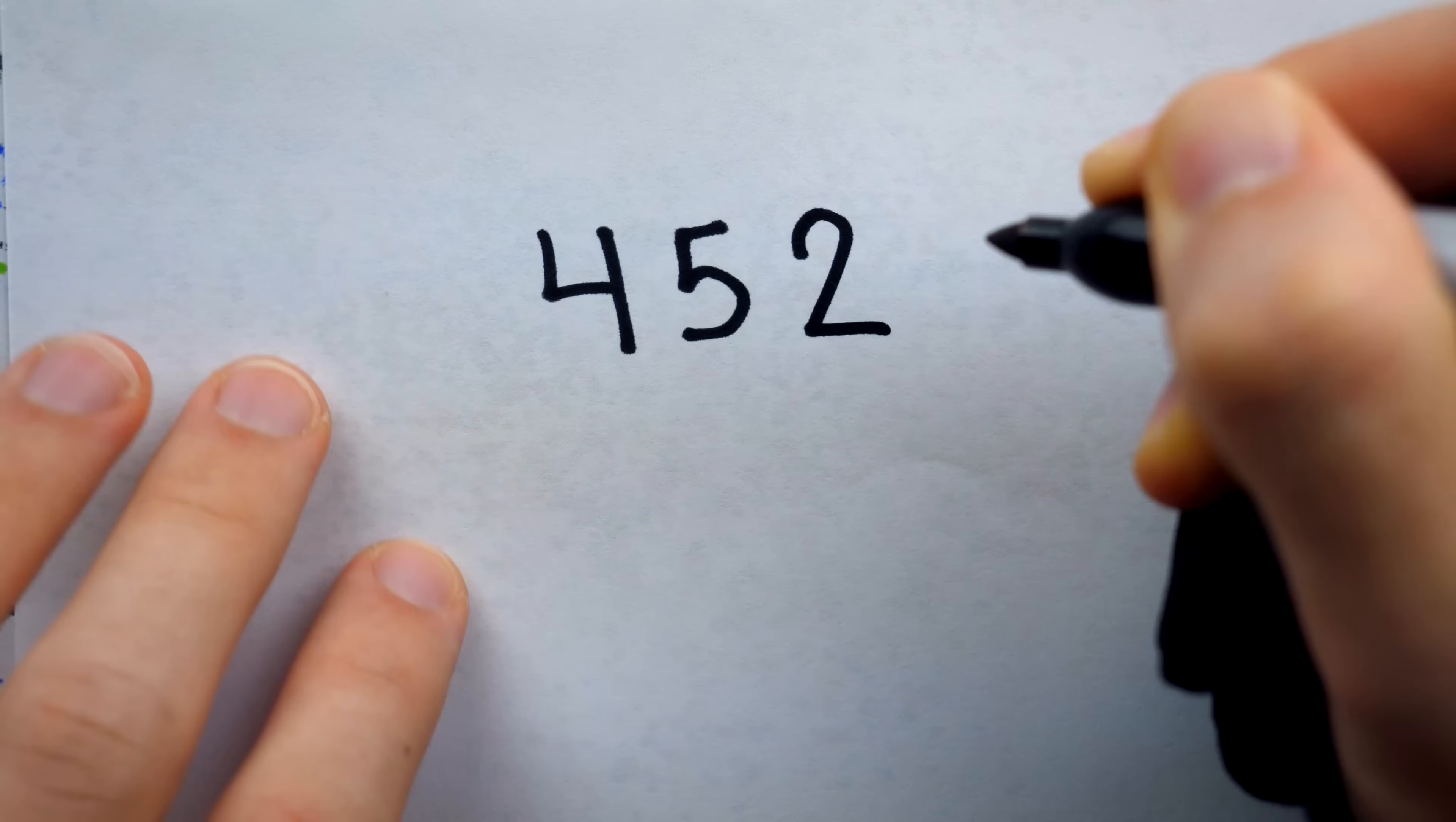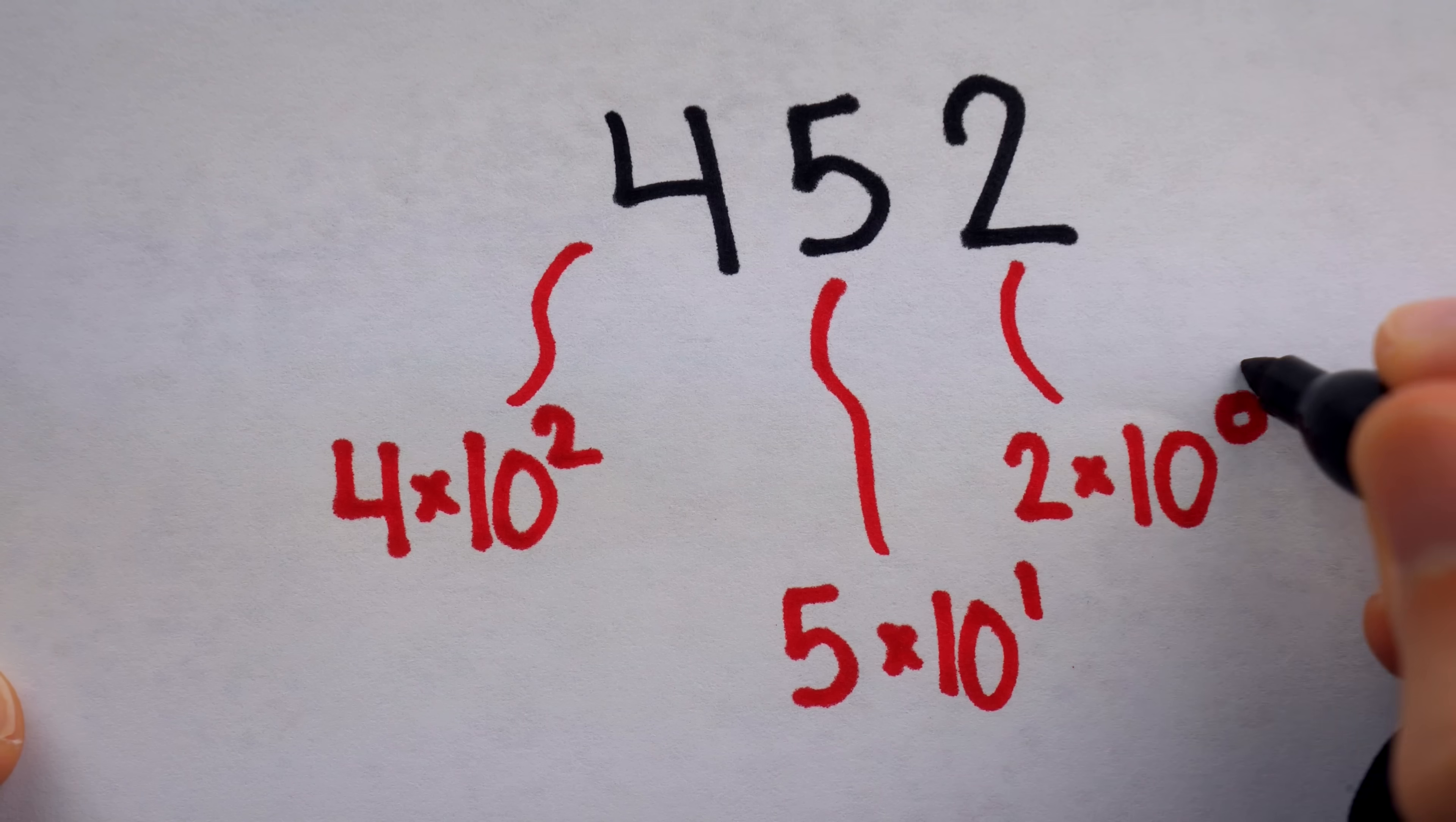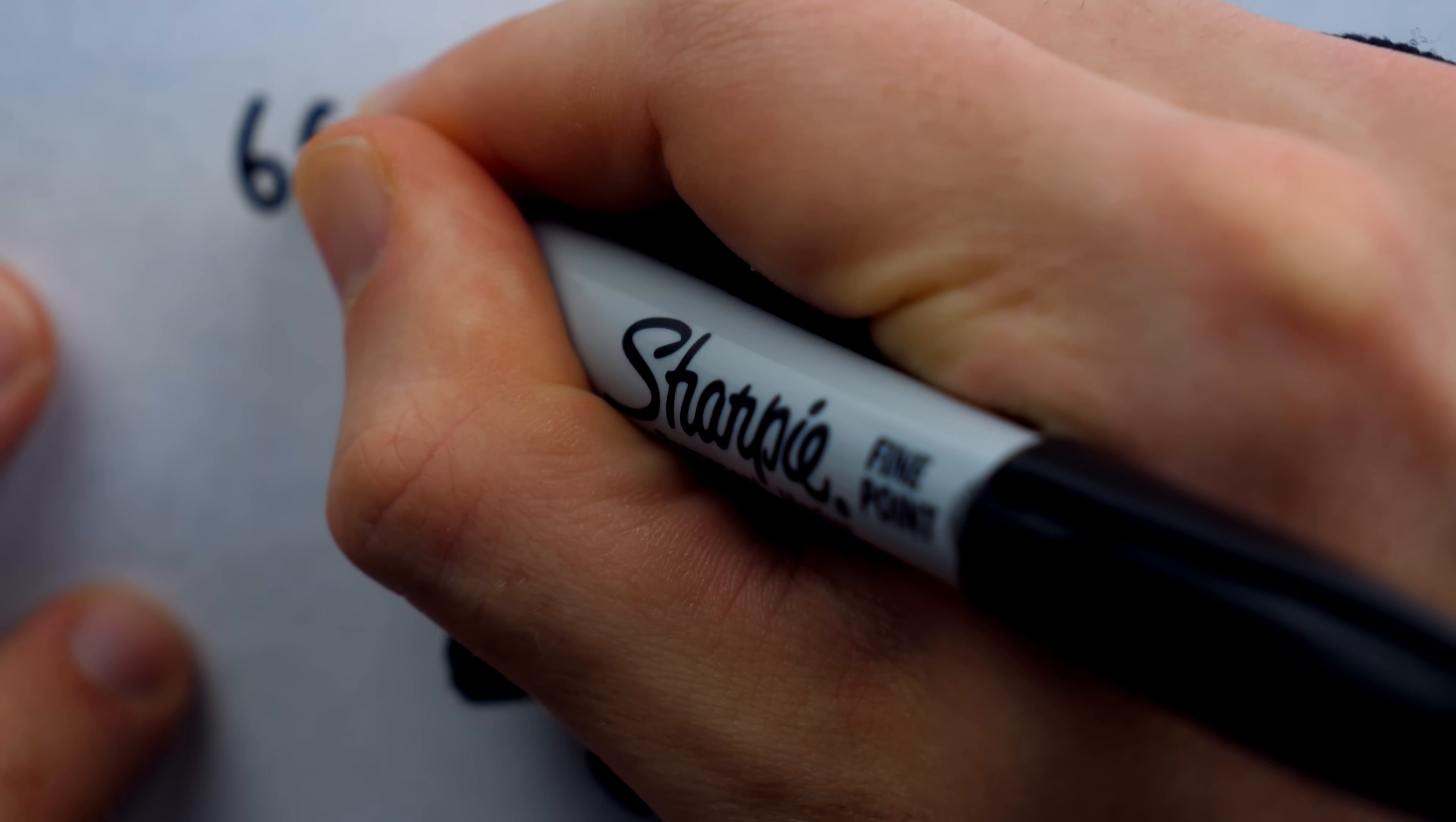Our modern decimal notation also uses a place value system, where the location of a digit in a number determines which power of 10 it represents. And although we don't use base 60 in our number system, we do use it in our time and in our angles.